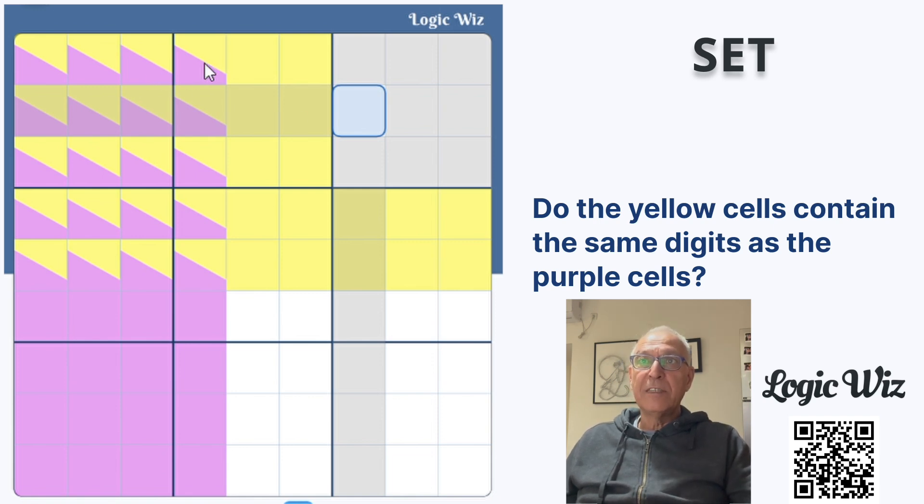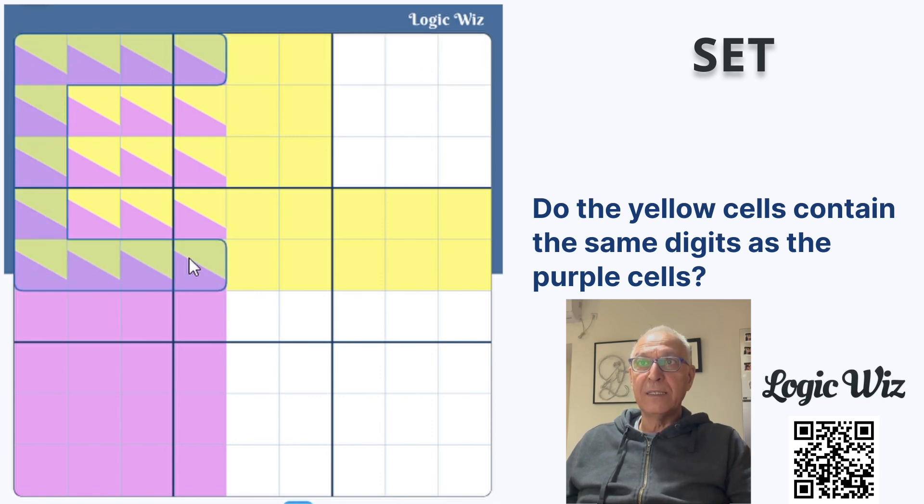And the digits here, the cells which have both colors in them, are basically equal, so I can remove them as well.